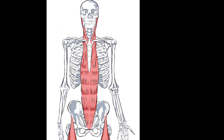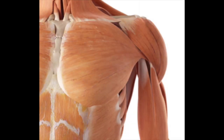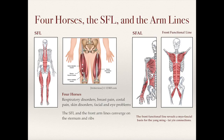This helps us understand why the four horses and four flowers are so good for treating conditions of the chest, because they're able to reach the fascia in the area of the sternum. The four horses are also indicated for breast pain and breast conditions as well as costochondritis. When we look at these fascial lines, we can increase our understanding of Dong's points.